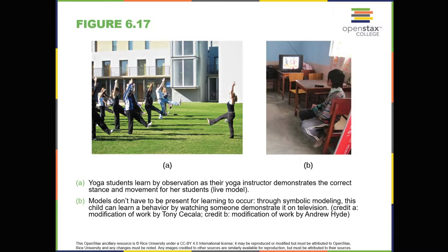We don't learn a behavior simply by observing a model. Bandura described specific steps in the process of modeling that must be followed if learning is to be successful: attention, retention, reproduction, and motivation. First, you must be focused on what the model is doing — you have to pay attention. Next, you must be able to retain or remember what you observed. Then, you must be able to perform the behavior that you observed and committed to memory — this is reproduction. Finally, you must have motivation. You need to want to copy the behavior, and whether or not you're motivated depends on what happened to the model. If you saw that the model was reinforced for her behavior, you'll be more motivated to copy her — this is known as vicarious reinforcement. On the other hand, if you observed the model being punished, you would be less motivated to copy her — this is called vicarious punishment.